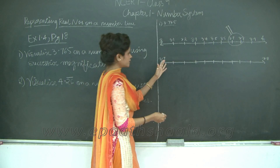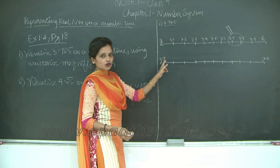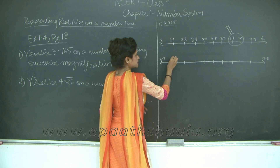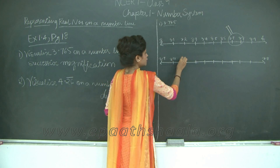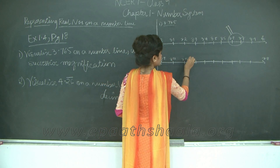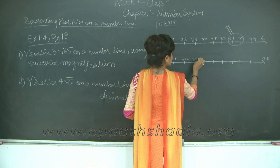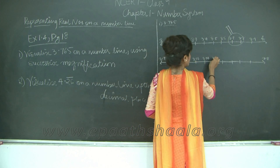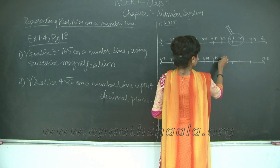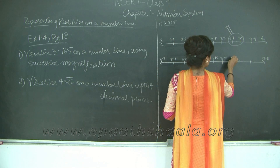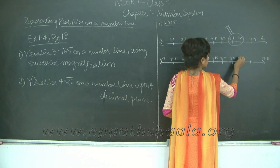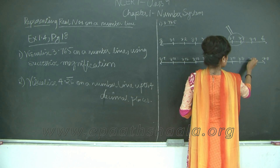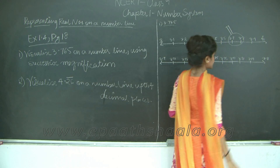Each of these intervals will increase by a difference of 0.01. So this gives us 3.71, 3.72, 3.73, 3.74, 3.75, 3.76, 3.77, 3.78, 3.79, and finally 3.8.